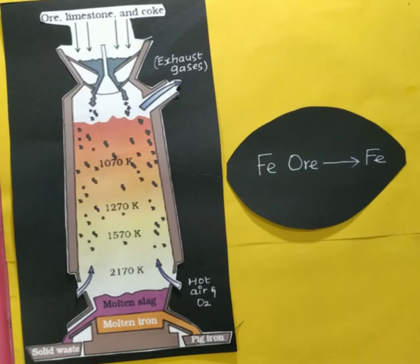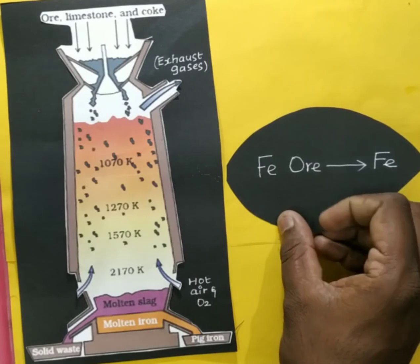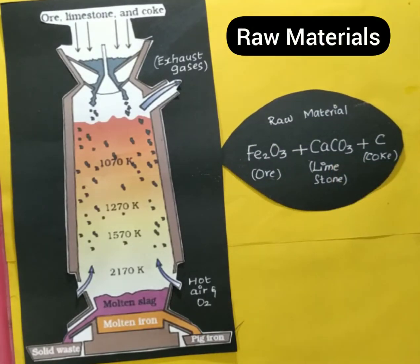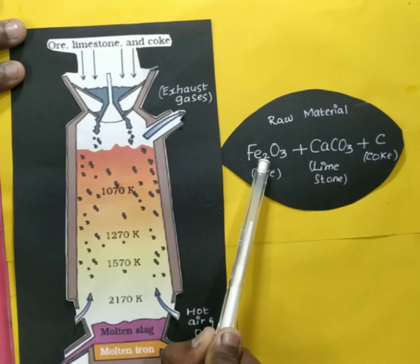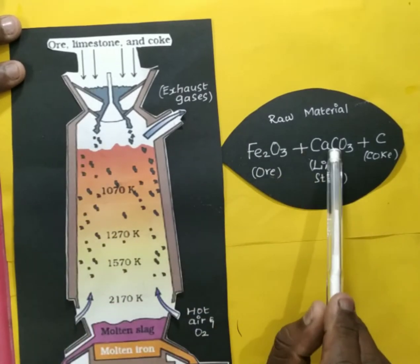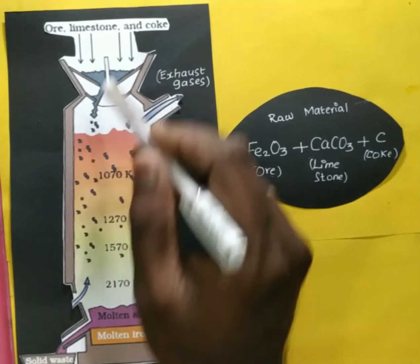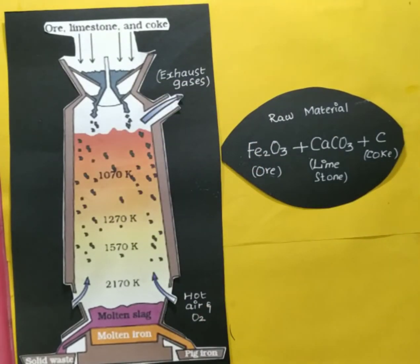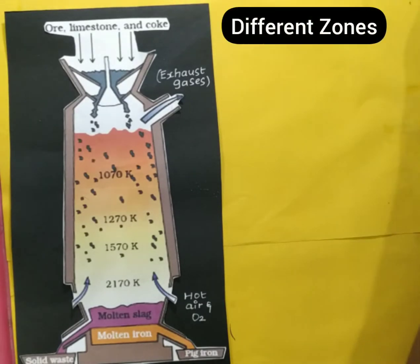The iron ore can be converted into iron using a blast furnace, where we will be getting crude metal. The raw materials used are: iron ore, that is Fe2O3; limestone, that is calcium carbonate (CaCO3); and coke, that is carbon. Allowing all these raw materials generates heat and converts iron oxide into iron in the blast furnace. There are different zones available.